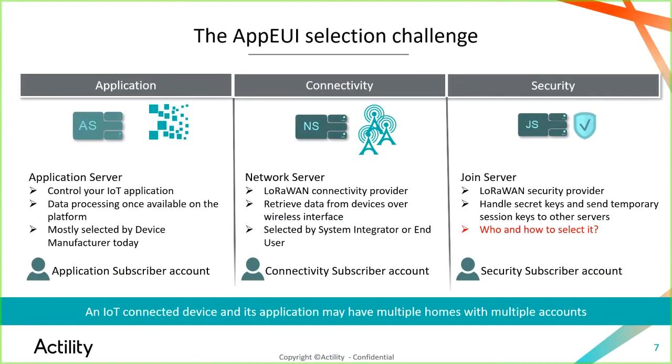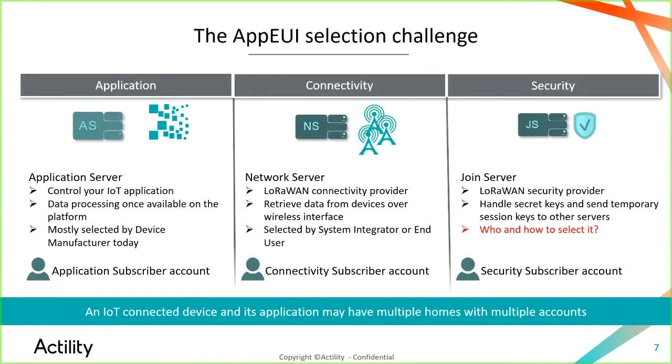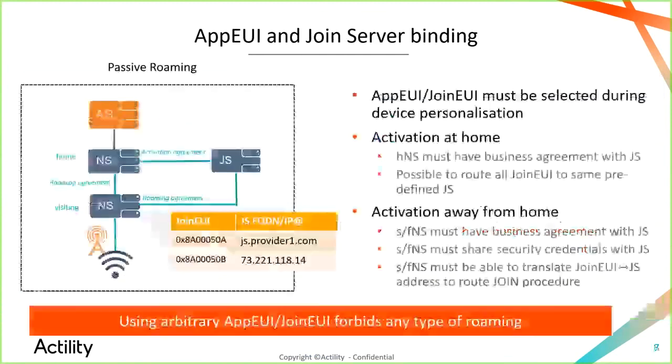The AppEUI absolutely does not identify an application or application server — there may have been some confusion in the past, but it has been clarified since the early LoRaWAN 1.0 releases. It is the identifier of the join server. Not assigning a unique join server to a particular JoinEUI will cause serious problems when it comes to roaming.